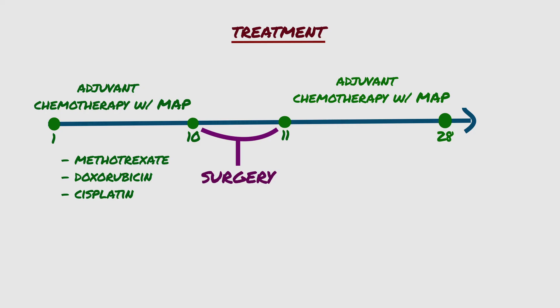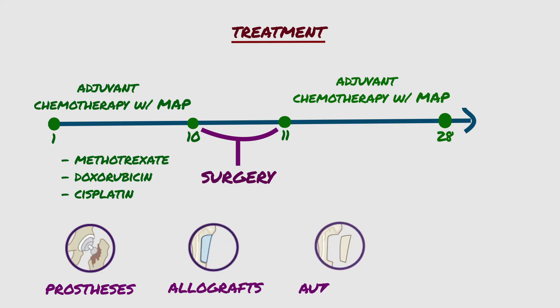The vast majority of malignant tumors of the long bones are treated with a variety of limb-sparing procedures that employ the use of prosthesis, allografts, or autograft. Rotationplasty is another option for patients as an alternative to amputation for skeletally immature patients with tumors of the femur.